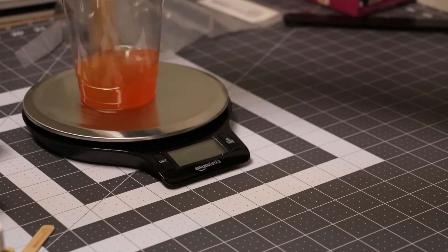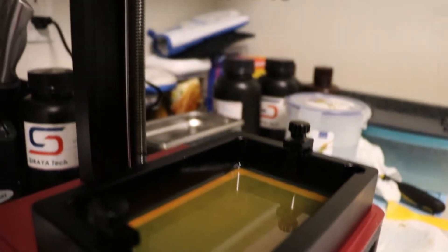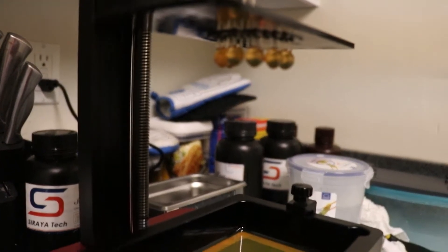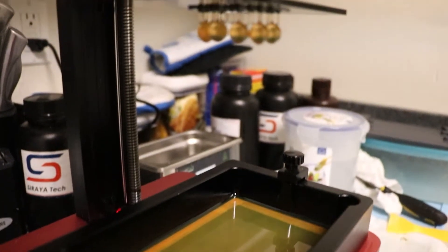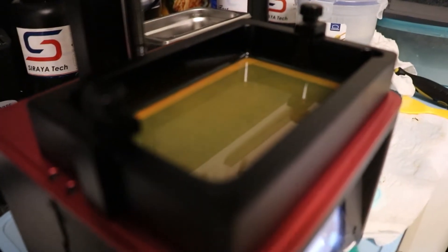You want to make sure you stir this stuff real good to make sure all the dye gets incorporated throughout the resin. Now that the resin is mixed and dyed, I went ahead and printed out the dragon balls from Dragon Ball Z project on my Elegoo Mars 3D printer. I think it came out nice. You can see the resin in the vat. They came out perfectly. I didn't mess with the resin at all.